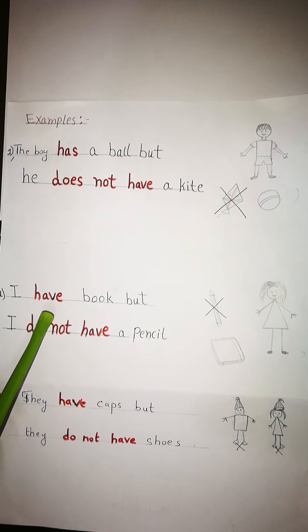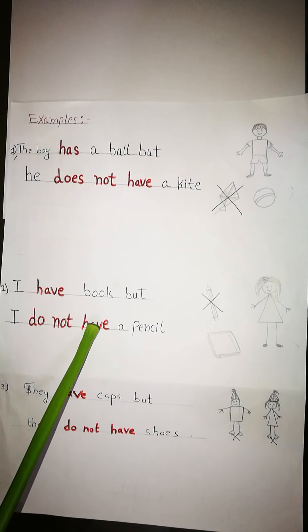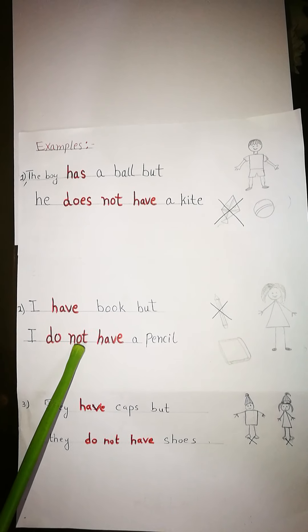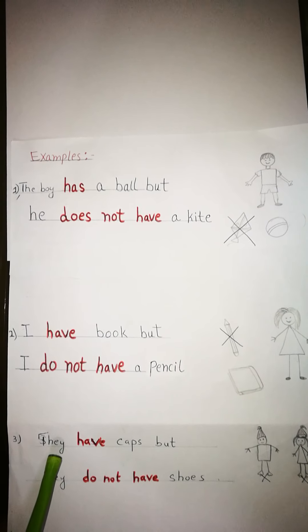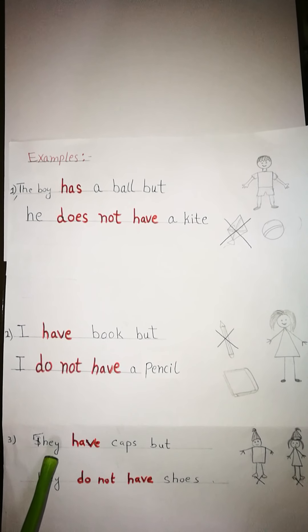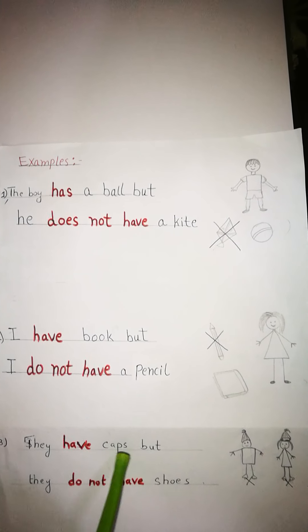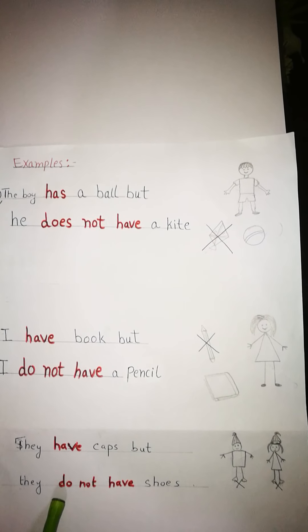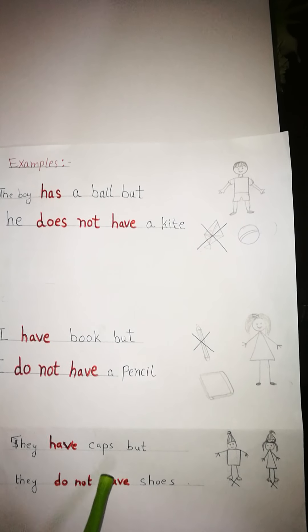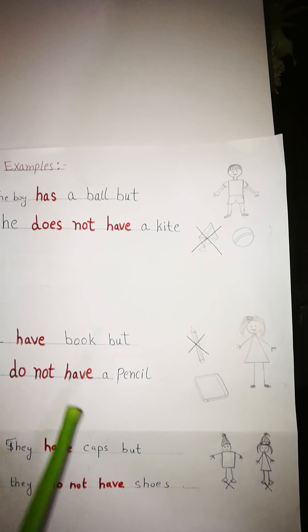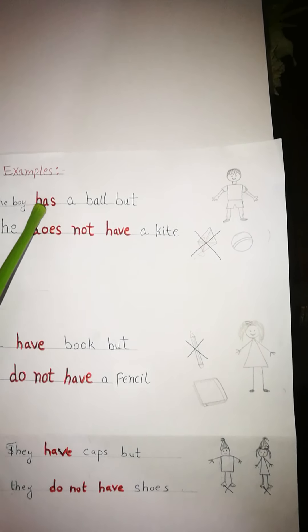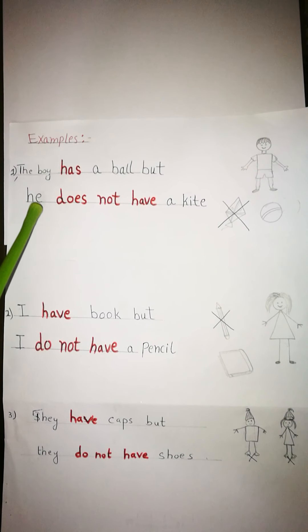There is no change in 'have' — we only add 'do not'. With 'I' we use 'do not'. In the third example, I have written 'they have caps'. With 'they' we use 'have', and when we change this into negative we write 'do not have'. So 'have' stays the same in the second and third examples, but in the first one, when there is 'has', we have to change 'has' into 'have'.